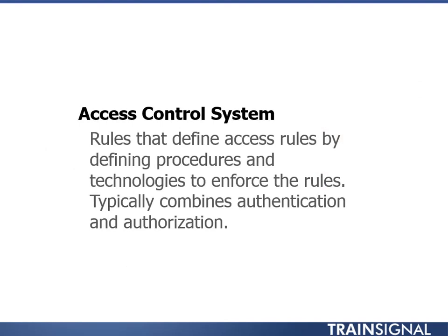An access control system ties these things together. It defines rules that require both identification and authentication along with authorization before granting access to resources. Think back to going through the airport — they have rules to check your ID before giving you a boarding pass, rules to make sure you're not on a dangerous persons list, rules to check your bags for hazardous items, and they always check your boarding pass both at security and at the airplane. These are well-defined rules that are part of the overall access control system.